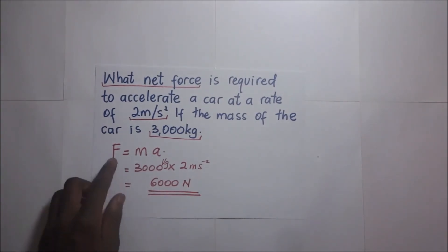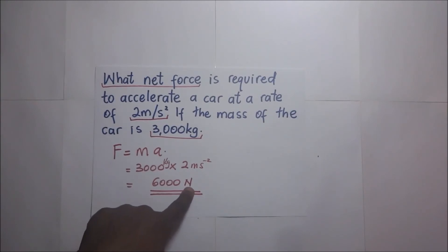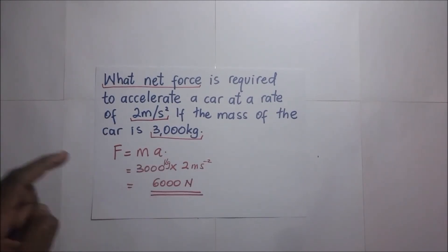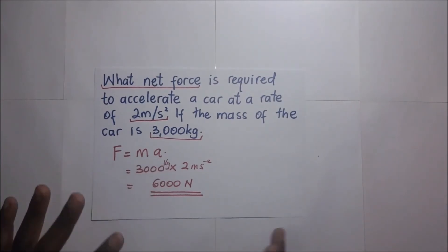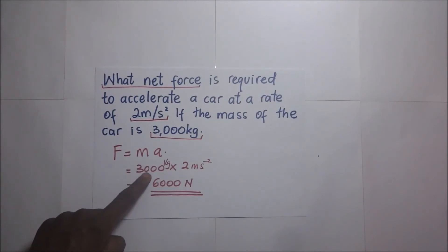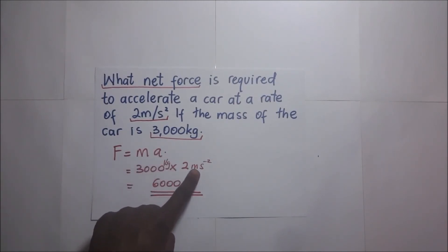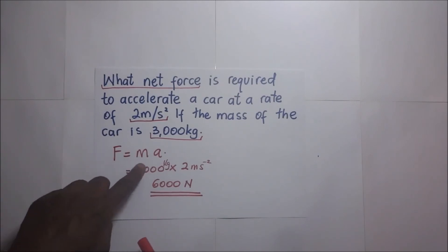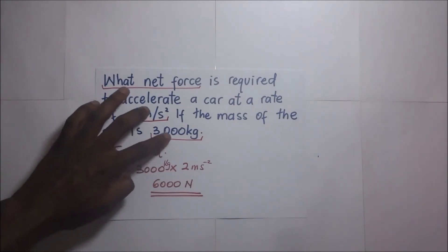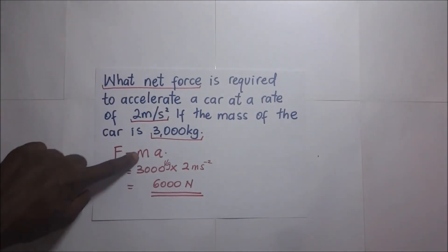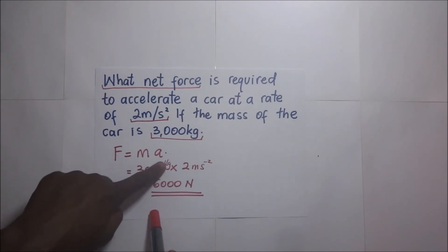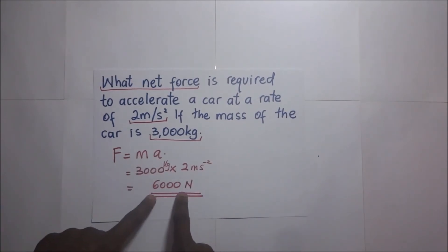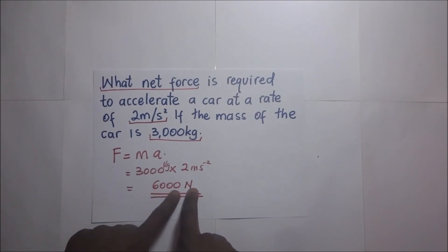Regardless of what units are given in the question, make sure the mass is converted to kilograms and the acceleration is in meters per second squared. It is only when mass is in kilograms and acceleration is in meters per second squared that the answer qualifies to be written as 6,000 Newtons, because one Newton is equivalent to one kilogram meter per second squared.